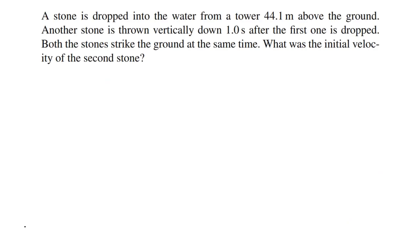Okay, a stone is dropped into the water from a tower 44.1 meters above the ground. Another stone is thrown vertically down one second after the first one is dropped. Both stones strike the ground at the same time. What was the initial velocity of the second stone?